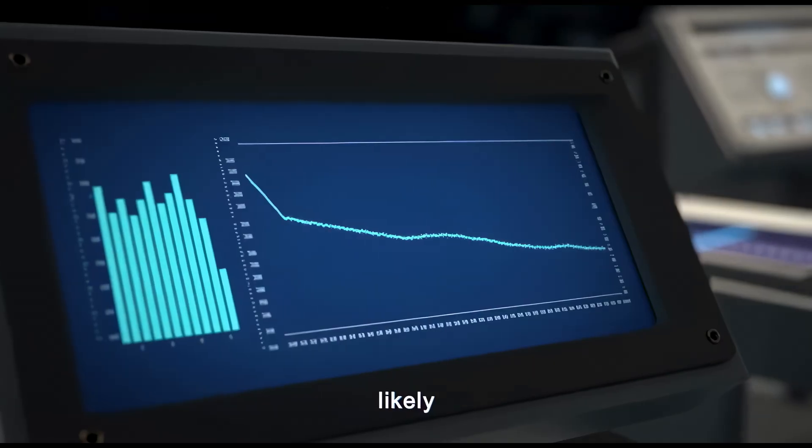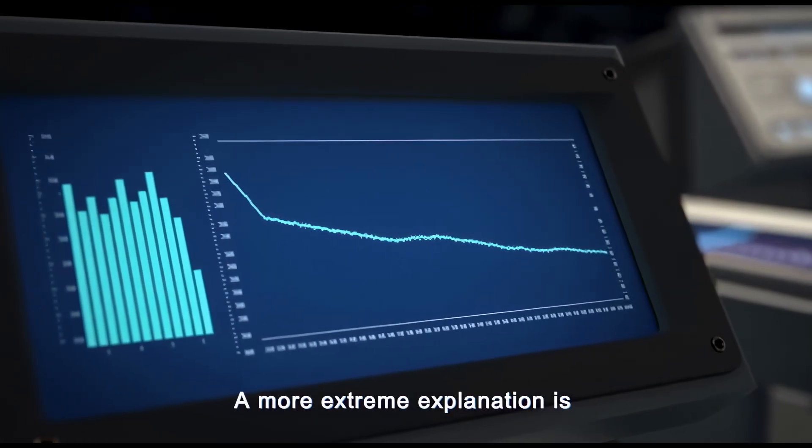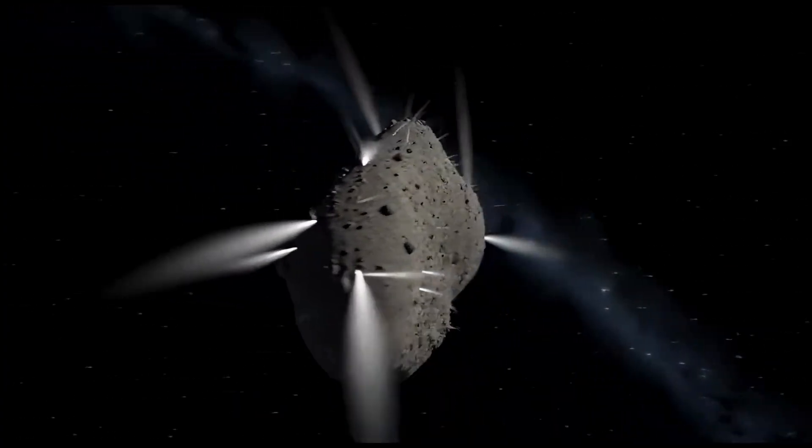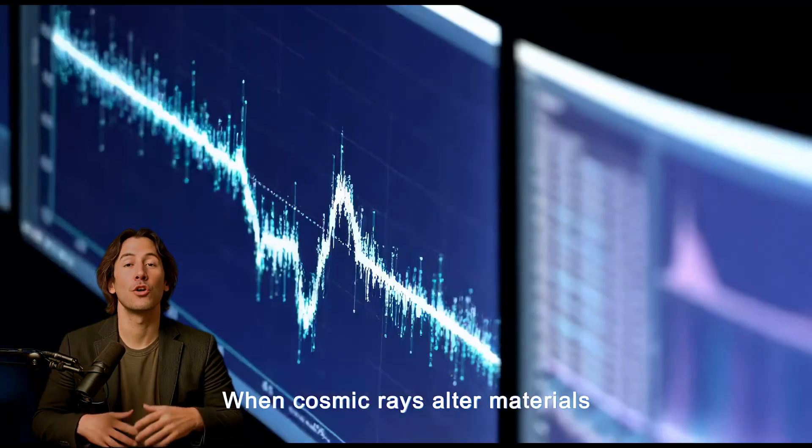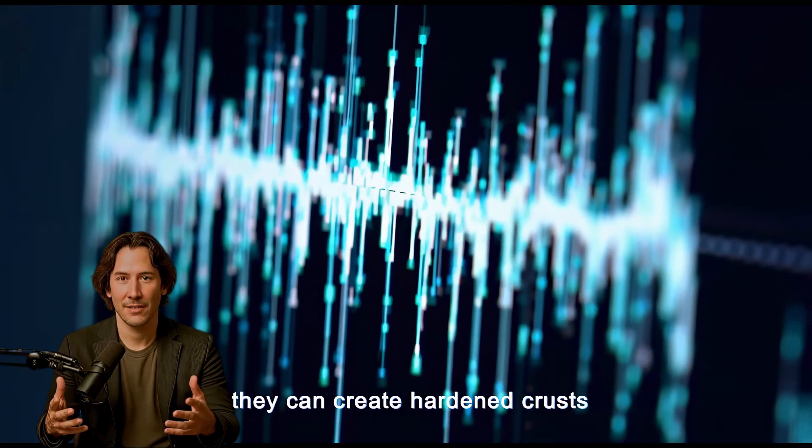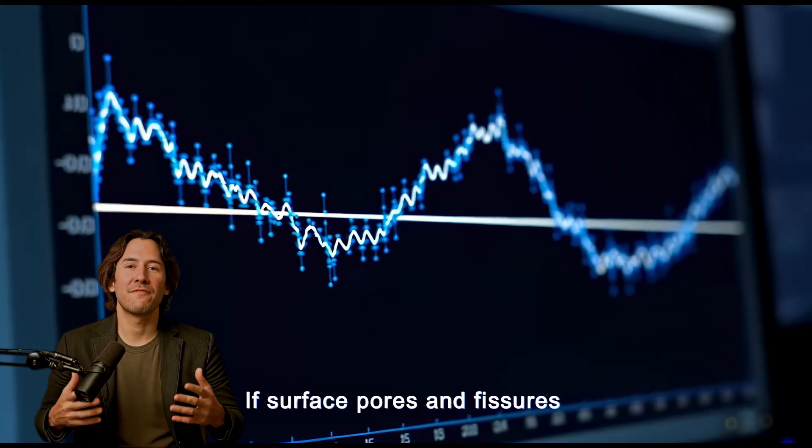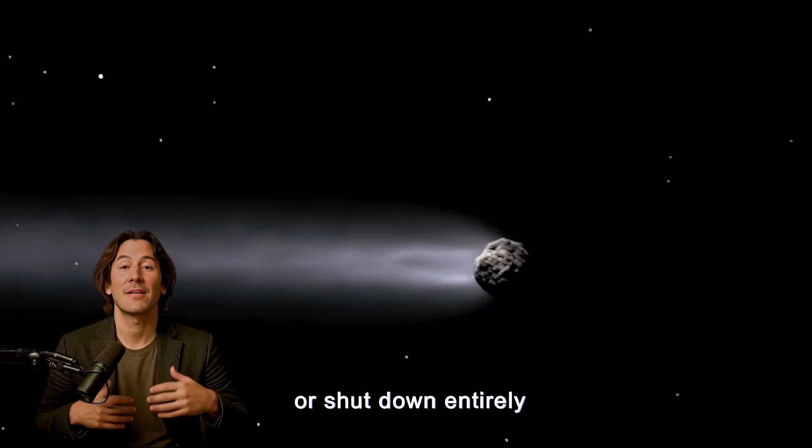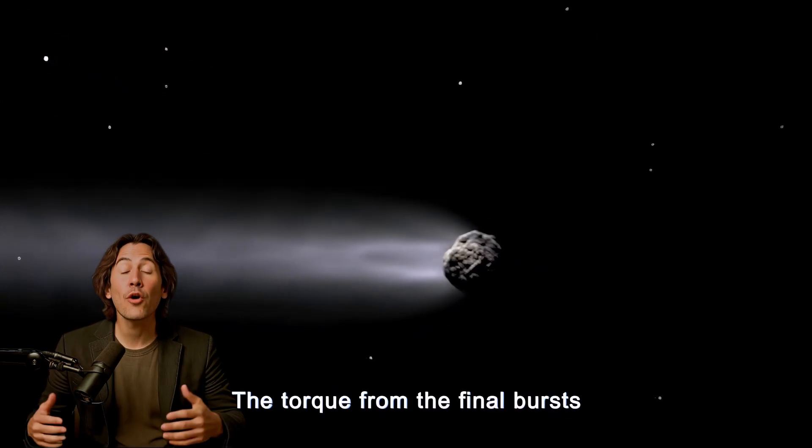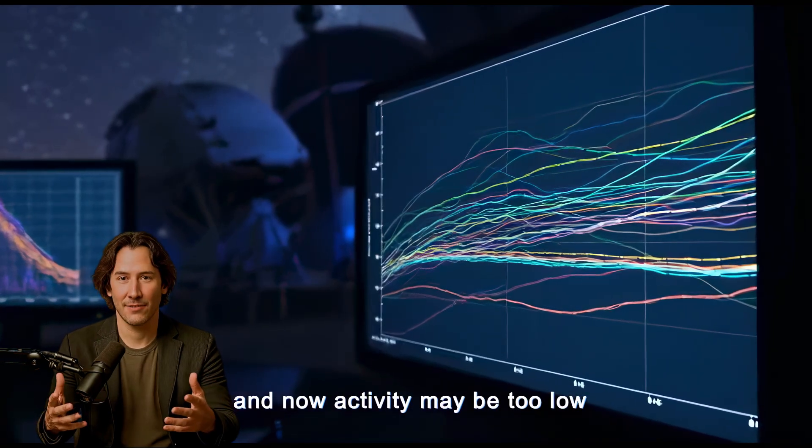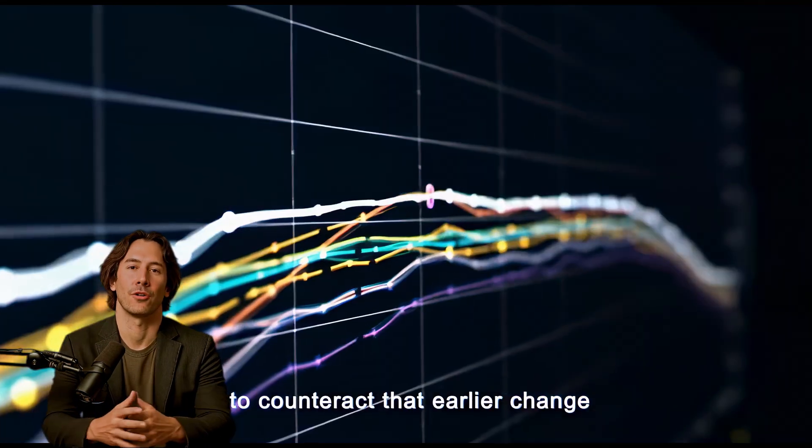A more extreme explanation is that the comet is entering a low activity phase because of surface sealing. When cosmic rays alter materials over billions of years, they can create hardened crusts. If surface pores and fissures sealed after perihelion cooling, jets could become intermittent or shut down entirely. The torque from the final bursts of activity might have slowed the nucleus, and now activity may be too low to counteract that earlier change.